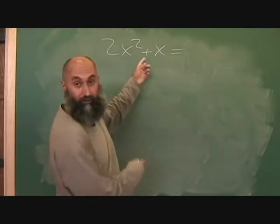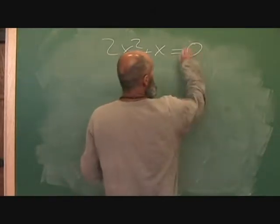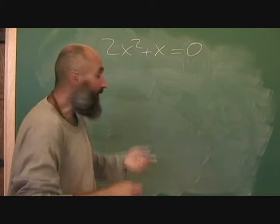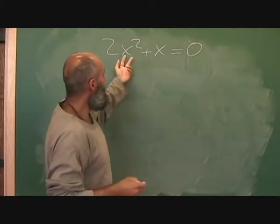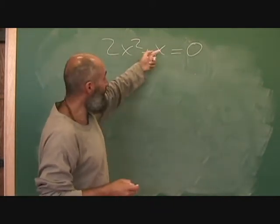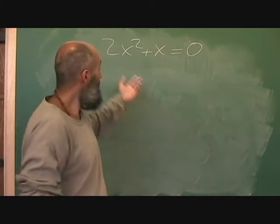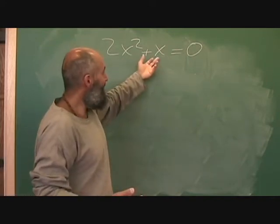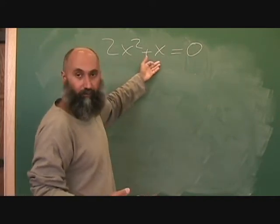Let's solve this equation right now. When you want to solve something like this, where you have two x terms at different powers so you can't combine them, what you want to do is take out a GCF from both of them.